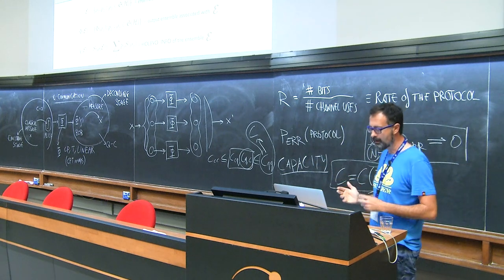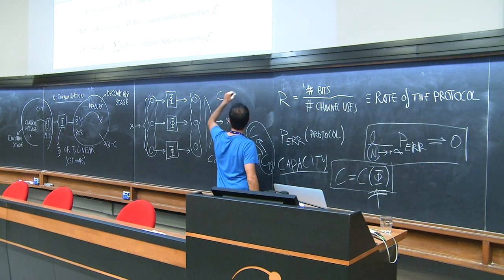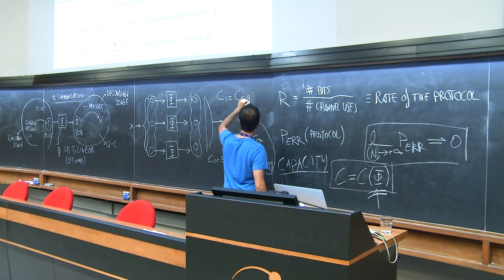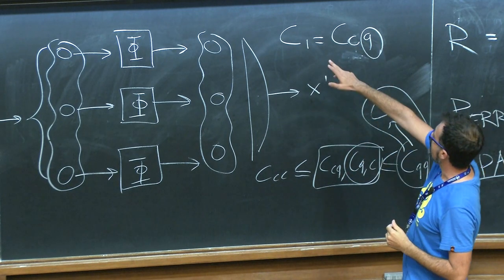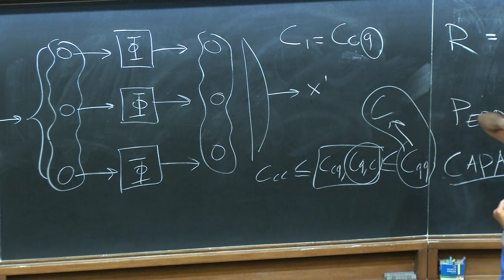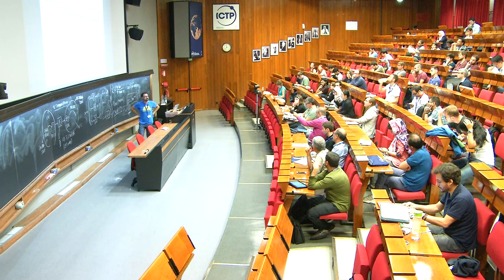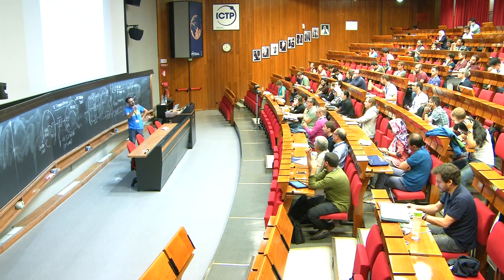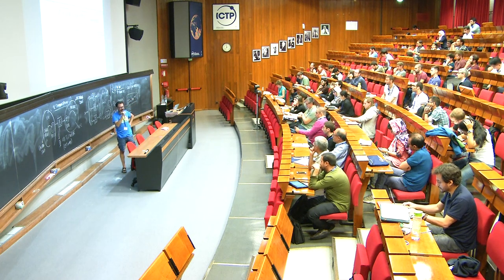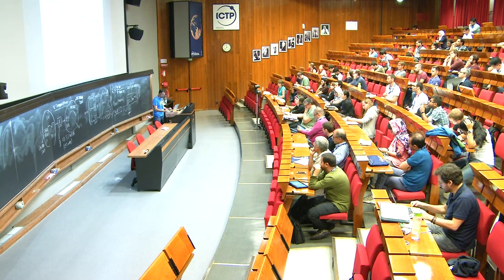Using the Holevo bound, one can prove that C1 — the CCQ capacity, where you use classical encoding and joint detection — has a single-letter expression: you compute the Holevo information optimized over all possible ensembles injected into the channel. This quantity is called the Holevo capacity of the channel, also known as C1, single-shot capacity, or CCQ — different names for the same object.